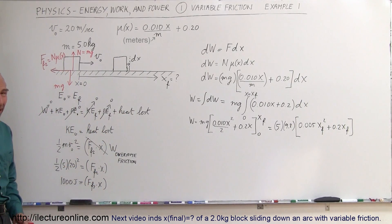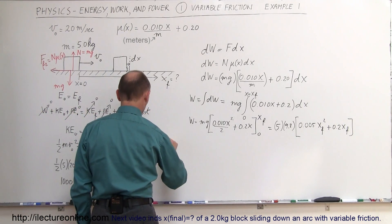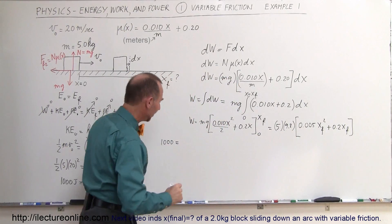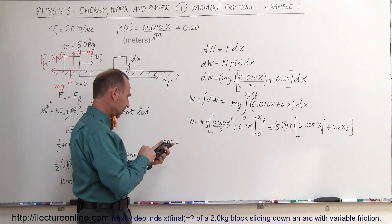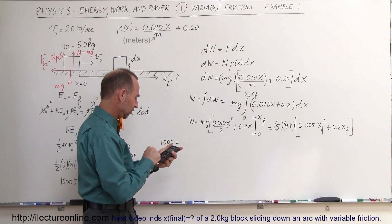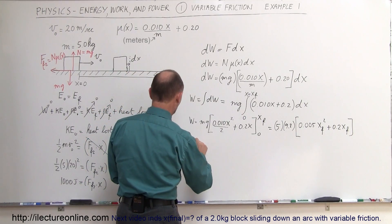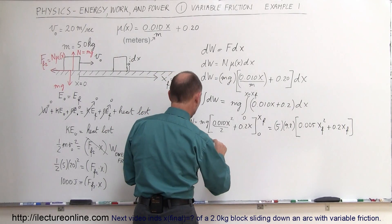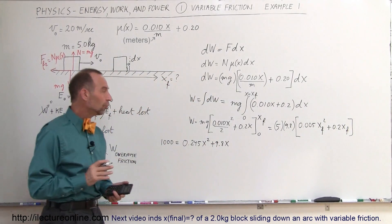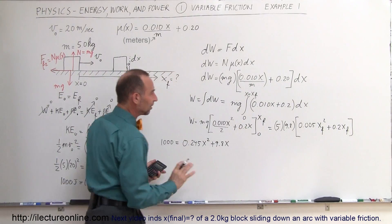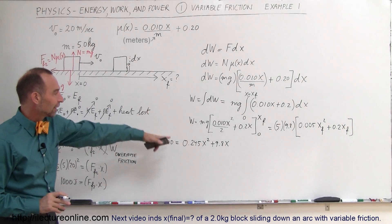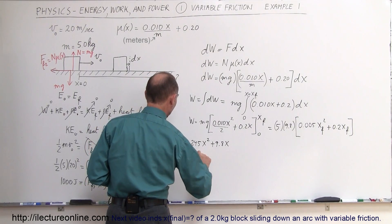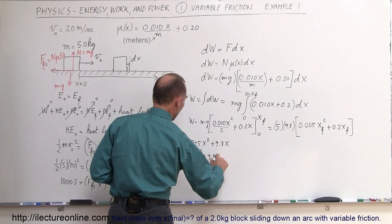When we set up the equation we get a quadratic: 1000 equals 49 times 0.005 which gives 0.245x², plus 49 times 0.2 which gives 9.8x. Rearranging, we get 0 equals 0.245x² plus 9.8x minus 1000, where x represents x final. So we have a quadratic equation to solve to find how far the block slides before coming to a complete stop.